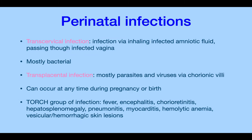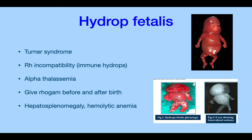Perinatal infections occur via transcervical infection — inhalation of infected amniotic fluid or passing through the infected vagina — usually bacterial infections like gonorrhea and chlamydia. Transplacental infection involves mostly parasites and viruses via the chorionic villi. The ones to be worried about are hepatitis and HIV. The TORCH group of infections presents with fever and encephalitis.